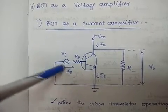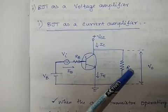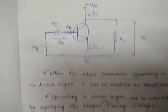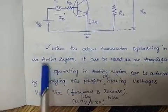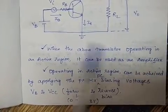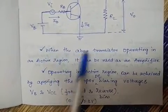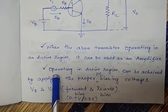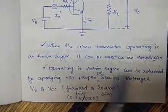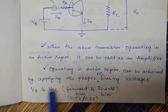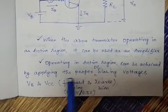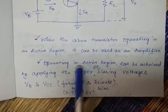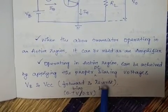We will see how current amplification is obtained using this circuit diagram. When the transistor operates in the active region, it can be used as an amplifier. Operating in the active region is achieved by applying proper DC bias voltages — Vb and Vcc — where Vb forward biases the emitter-base junction and Vcc reverse biases the collector junction.